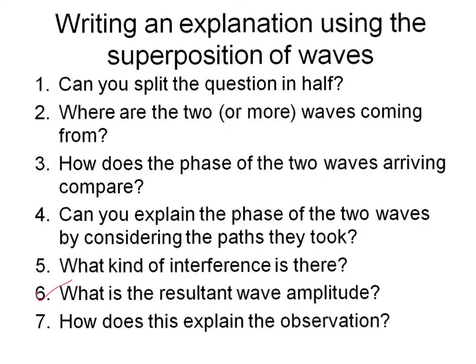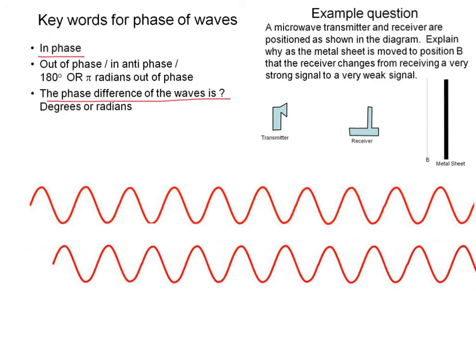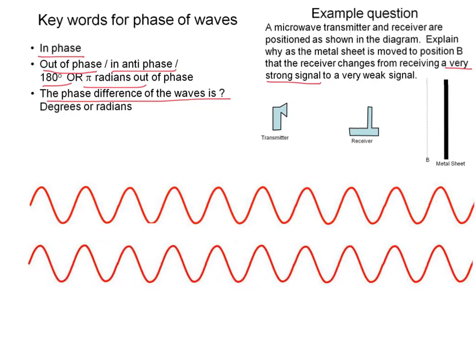Having thought about steps five and six, we're now going to skip back and think about step three: how does the phase of the two waves arriving compare? The two waves could be described as in phase, or we could say the phase difference is zero degrees or zero radians. Alternatively the waves could be out of phase — in antiphase — with a phase difference of 180 degrees or pi radians. But remember, we were trying to explain a very strong signal; we decided there was constructive interference, which means the waves must be in phase.